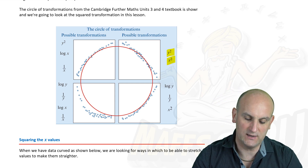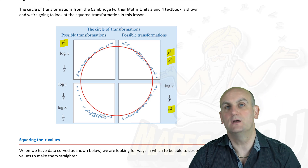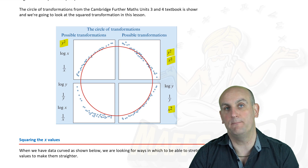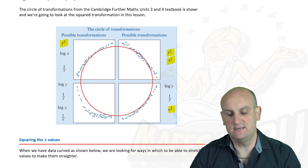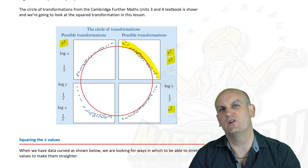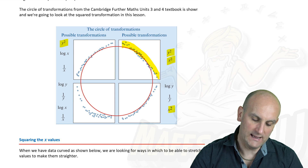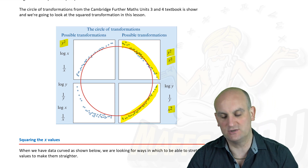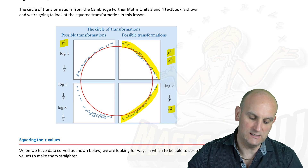The transform we're going to deal with in this video is the x-squared transform, but the principle very much applies to y-squared as well. As you can see, there's an x-squared and a y-squared on the circle. These transforms actually apply to three parts of the circle of transformations, and we're going to do an x-squared transform looking at data in that particular way.